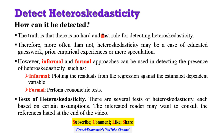The truth is that there is no hard and fast rule for detecting the problem. Therefore, more often than not, heteroscedasticity may be a case of educated guesswork, your previous empirical experiences, or by mere speculation. However, there are informal and formal approaches by which the problem can be detected. The informal approach is by plotting the residuals from the regression against the estimated dependent variable, while the formal is by performing various econometric tests.